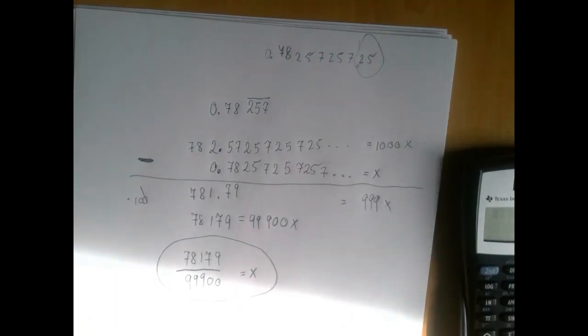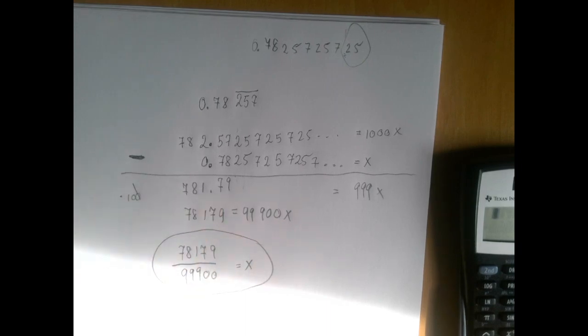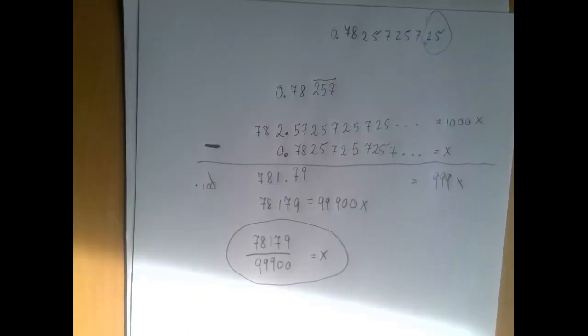Okay, so just to recap, in this problem we had to multiply by a suitable 10 power. The first multiplication depended on how long the repeating block is. The second depended on how many decimals do we need to move the decimal point from here to get to an integer. Thank you for watching.